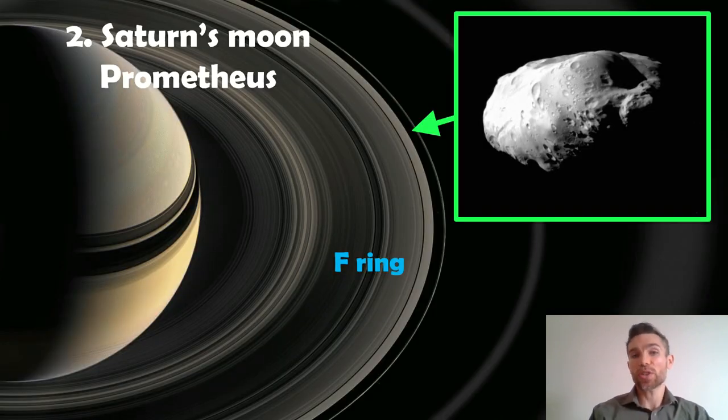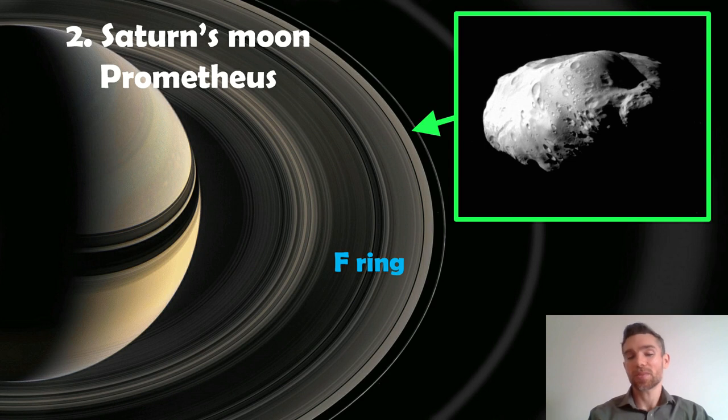So that was the first one. And I quite like that one. It's a large moon captured. Now, the second one means probably a little bit more to me because I spent a lot of my PhD looking at this particular moon and how it interacted with Saturn's rings. And dynamically, it's very interesting, at least for me. So this is Saturn's moon Prometheus.